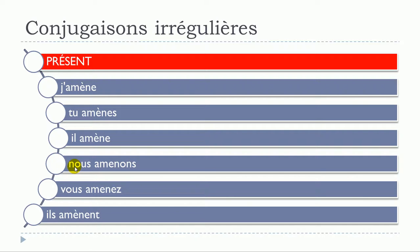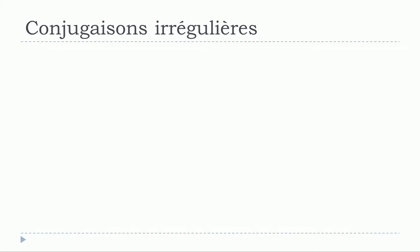Nous doesn't change — nous amenons, the 's' is silent. Vous amenez, exactly the same, you don't pronounce the final consonant. Then ils amènent, the accent comes back. So remember the only thing you have to change or modify is to put this accent — l'accent grave.